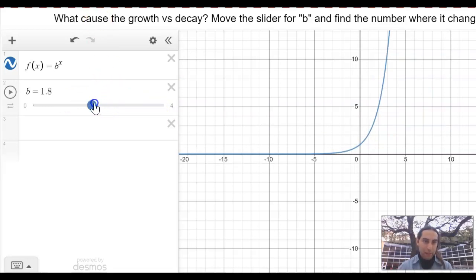So let's see here. What was the question? What causes growth versus decay? Well, b. If b is greater than one, it's exponential growth. If b is between zero and one, it's exponential decay.